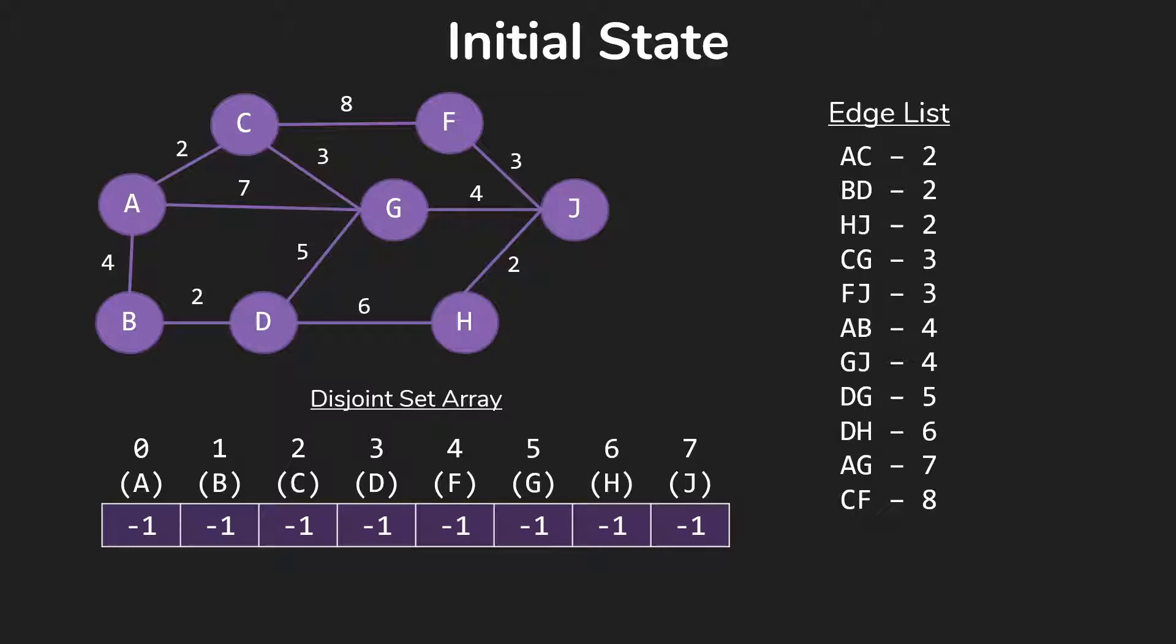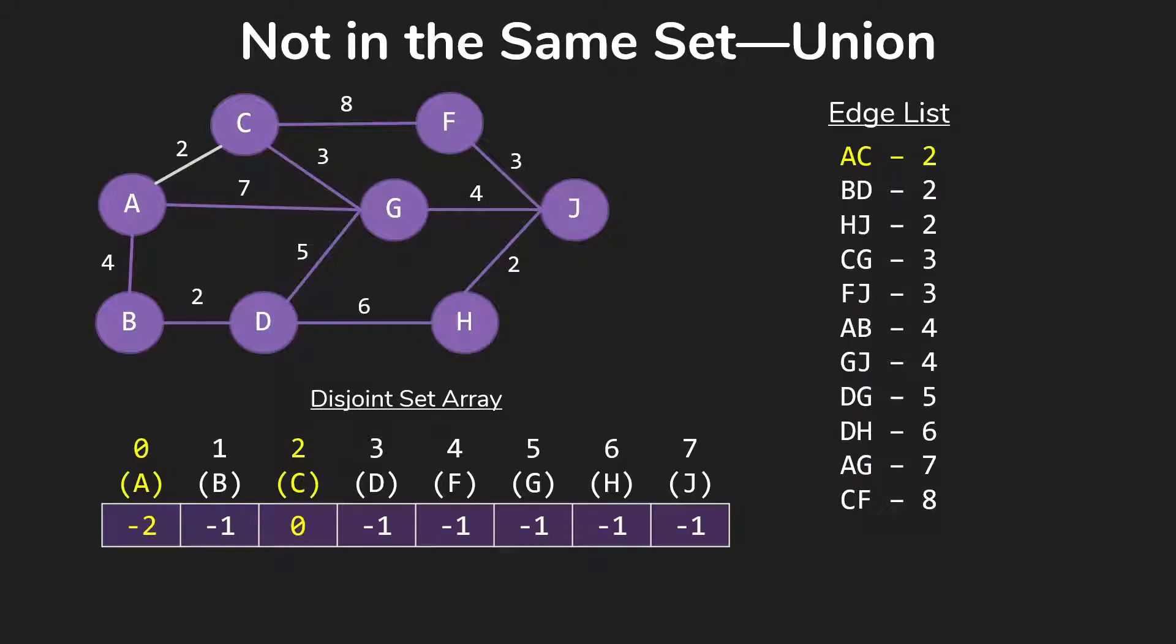We're going to start the process and take our first edge off the list. So we're going to take AC, and we're going to look at the disjoint set array at A and C and see whether or not they're in the same set. Of course, here at the beginning, they're in different sets. So we're going to add that edge to our minimum spanning tree and do the union of our disjoint sets.